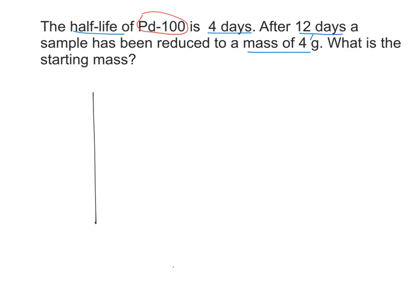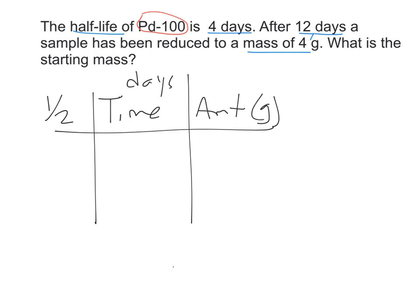This is an example where I'm going to be working backwards. I'm going to set my problem up with half-life, time, and amount. My amount is in grams, my time is in days. Starting half-life with zero, time with zero, my amount is a question mark. I know that my half-life is four days. I have to go down to 12 days - four, eight, twelve - so remember for time you're adding the time. Four plus four is eight, eight plus four is twelve.